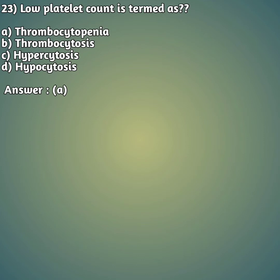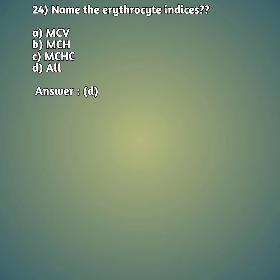Question 23: Low platelet count is termed as — option A: thrombocytopenia, option B: thrombocytosis, option C: hypercytosis, option D: hypocytosis. The right answer is option A, thrombocytopenia. A low platelet count is called thrombocytopenia, while a high platelet count is termed thrombocytosis.